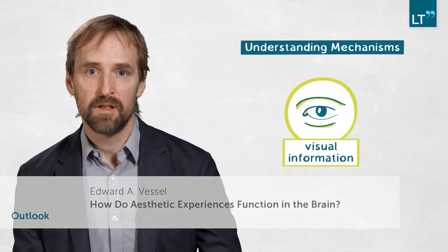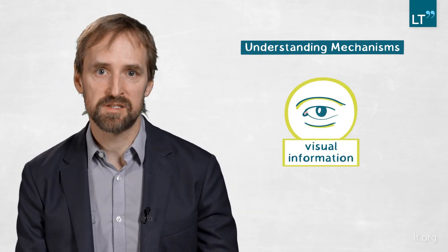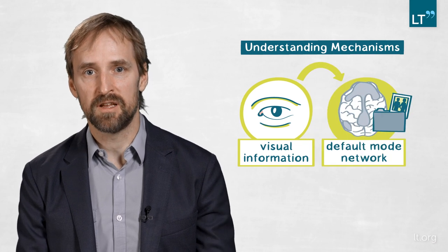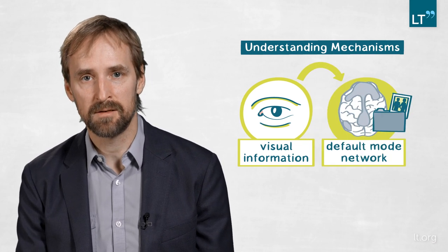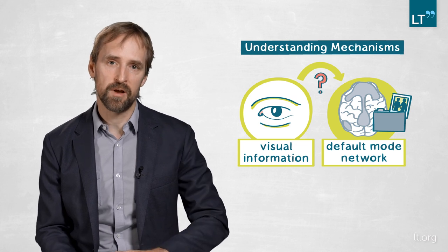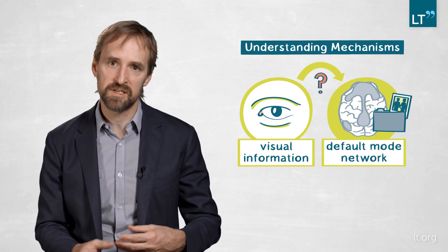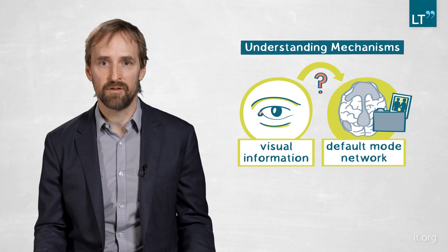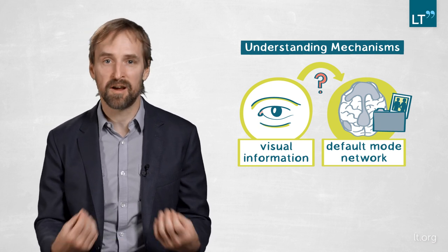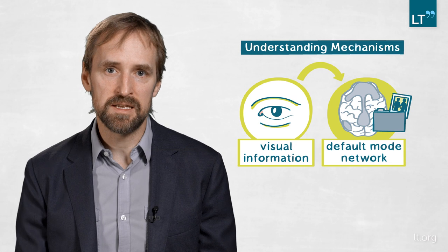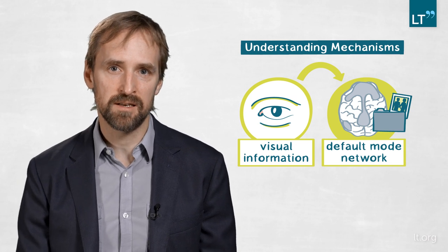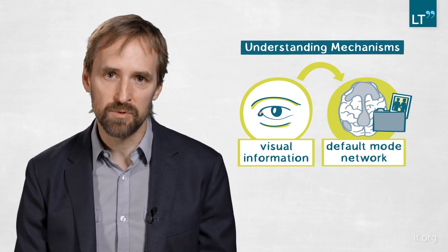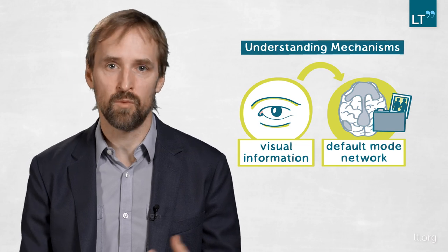The most immediate questions that this research raises are really mechanistic. How is it that information about your visual world then makes its way to this default mode network, to the internally directed DMN? And how is that information transformed from information about what it is that you're experiencing to then a representation of how you feel about it, whether or not you find it to be beautiful or not? So we really need a better mechanistic understanding of how these networks talk to each other and how the information flows from one place to the next.